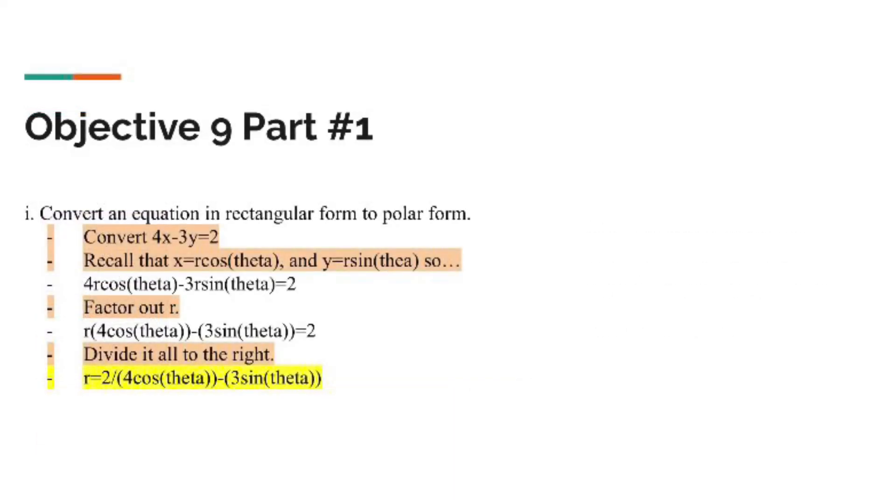Lastly, I did objective number nine. It asked me to do two different things. The first is to convert an equation in rectangular form to polar form. The equation I created was 4x minus 3y equals 2. Recall that x equals r cosine of theta and y equals r sine of theta, so we get 4r cosine of theta minus 3r sine theta equals 2. Then I factored out the r.